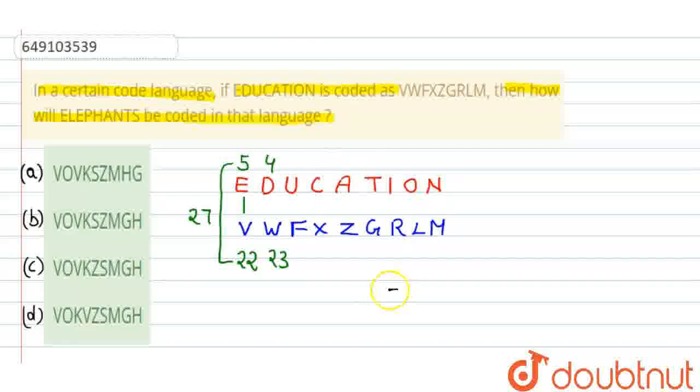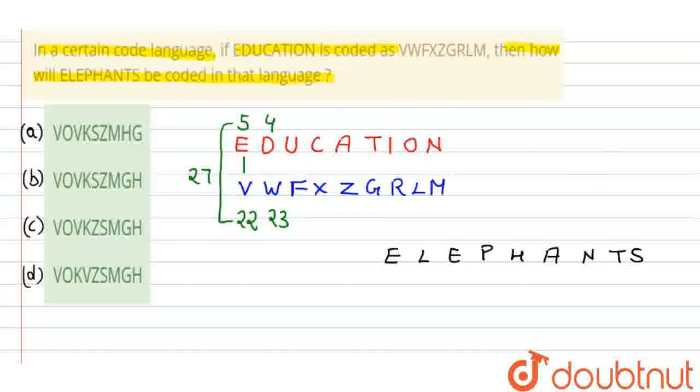Now, we have to code ELEPHANTS. That is E, L, E, P, H, A, N, T, S. Now, ELEPHANTS. E in English alphabet is the fifth term. L is twelfth. E, again fifth.